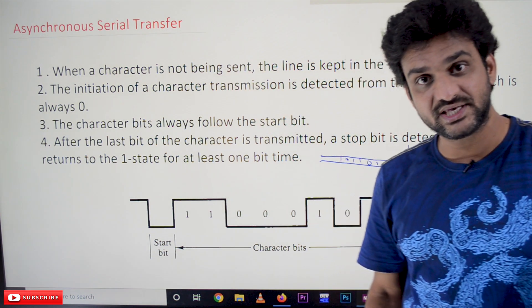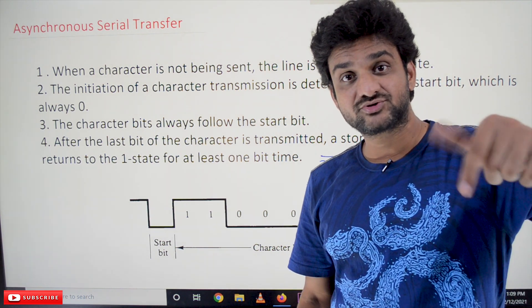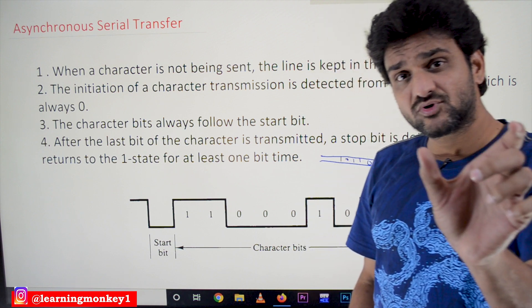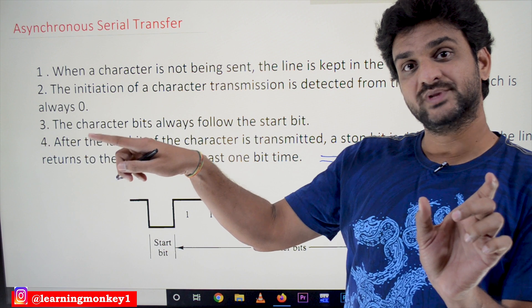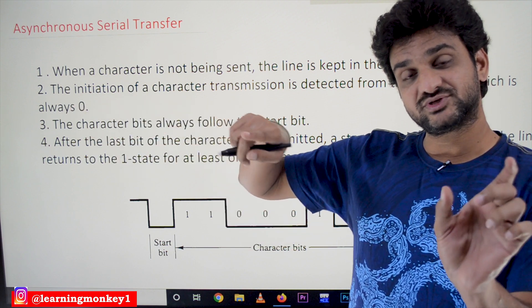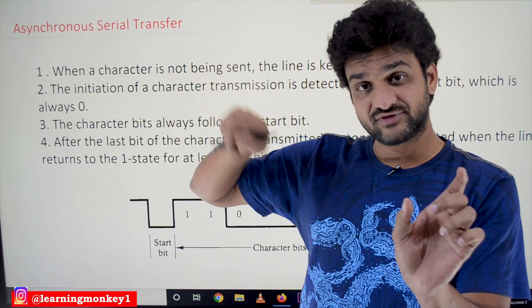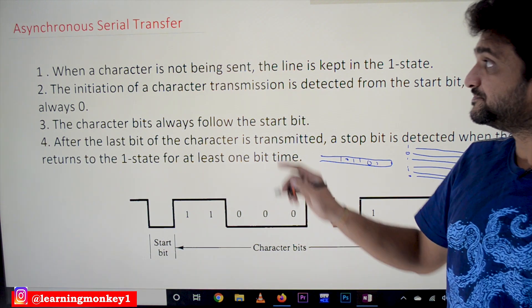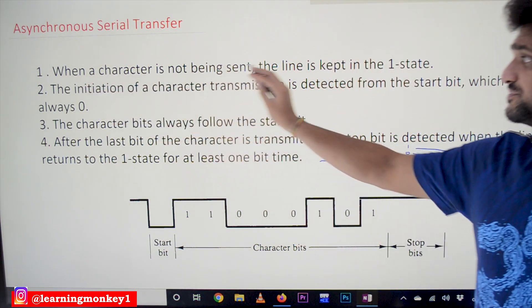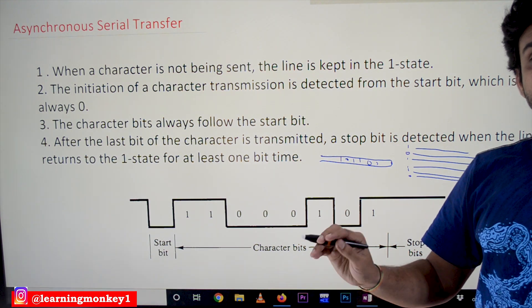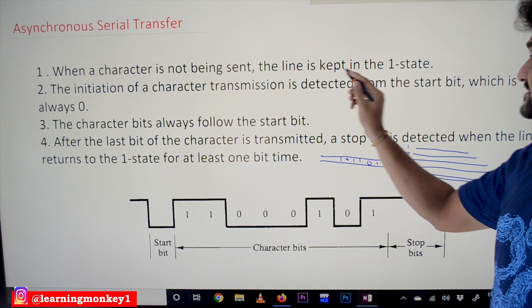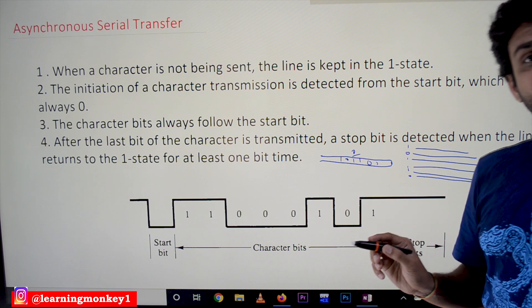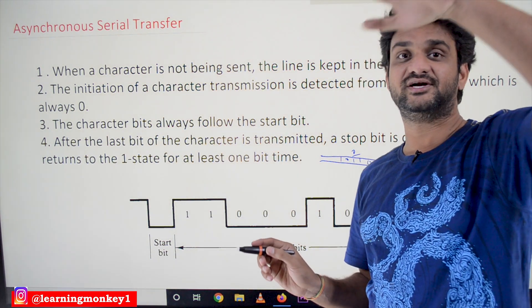For example, if you press a key on the keyboard, it is going to generate an 8-bit code. Those 8-bit codes need to be transferred serially to the CPU. When a character is not being sent — nothing has been pressed on the keyboard — the line is kept in one state. This wire is always kept at logic 1, meaning continuous high voltage is present on the wire.